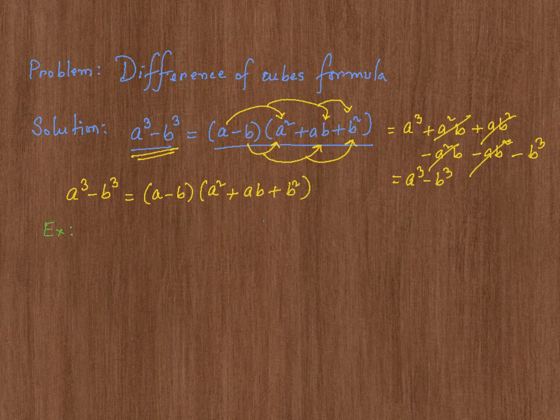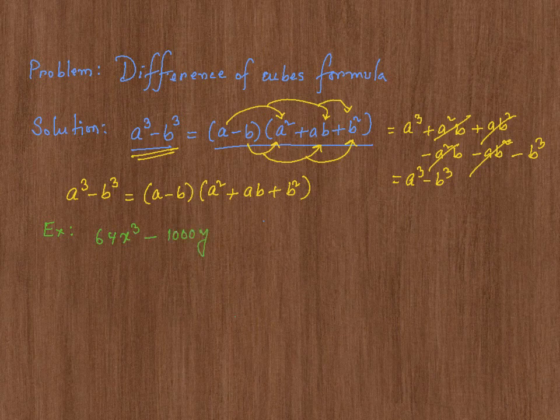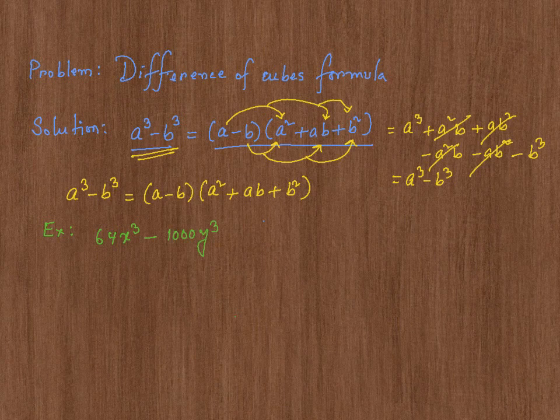So the example is going to be 64 x cube minus 1,000 y cube. We need to factor it.